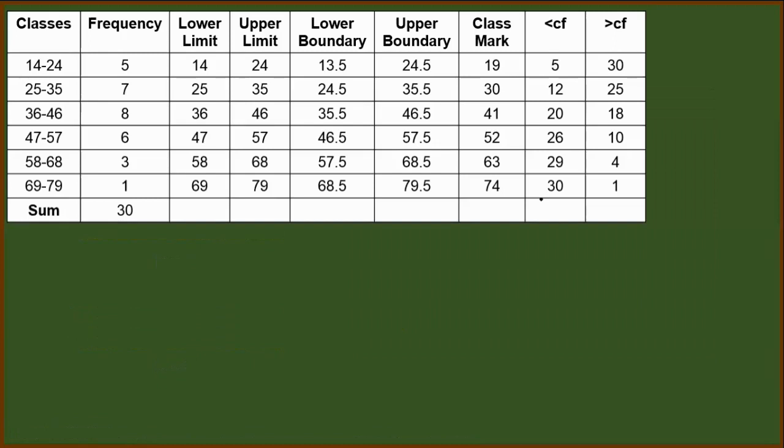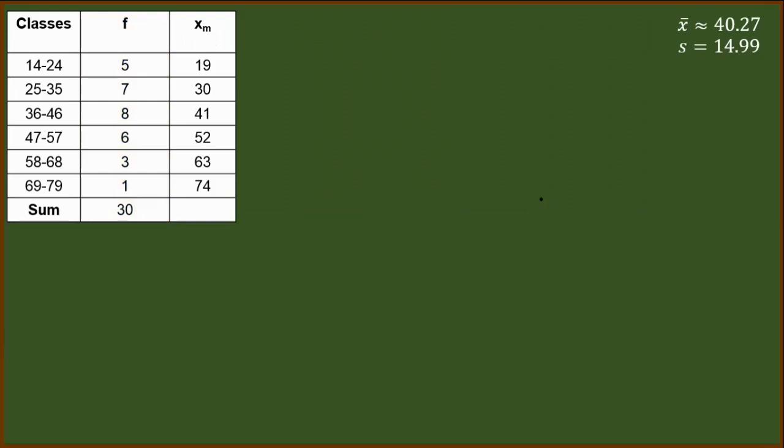As I have mentioned earlier, if we are dealing with group data, we expect that the given is already in frequency distribution table. If the given is not yet in FDT, then we have to construct first the FDT. We have a separate video about constructing FDT. Since for this situation we have constructed the FDT, we can just select the columns that we need for kurtosis. For this instance, we are just dealing with the frequency and the class mark. And of course, the mean and the standard deviation. For the other columns, we can omit them for now because they are unnecessary. Instead, we will add the other necessary columns to compute for the kurtosis.